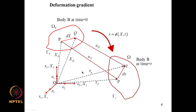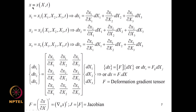Consider a line segment PQ in body B at the reference configuration. Due to deformation, PQ moves to a new position. The initial length is dX (capital) and the deformed length is dx (lowercase). The position vector in the current deformed configuration is a function of position in the original configuration. From this we deduce that dx1 = (∂x1/∂X1)dX1, etc. The set of equations relating components in the deformed configuration to those in the undeformed configuration through a matrix is known as the deformation gradient tensor F.